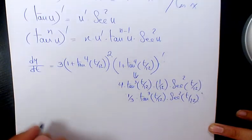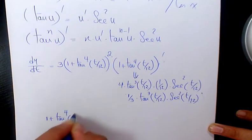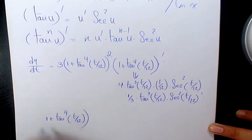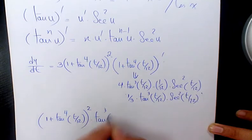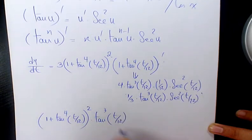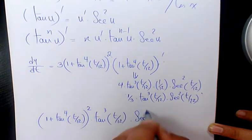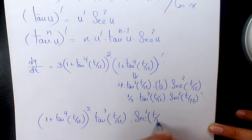And we're going to have 1 plus tan to the power of 4 t over 12 to the power of 2 times tan to the power of 3 t over 12 times secant squared of t over 12.